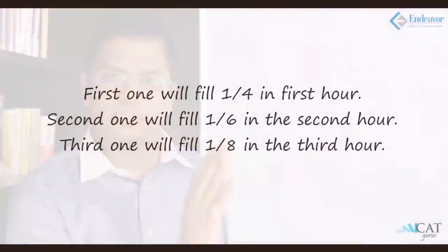24 upon 13 is more than 1 but less than 2. So it will take more than 1 cycle but less than 2 cycles. At the end of 1 cycle how much work will be done? 1 by 4th by the first one, 1 by 6th by the second one, 1 by 8th by the third one. In all, 13 by 24 will be done. What is left? 11 upon 24 is the work left at the end of the first cycle.